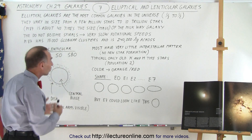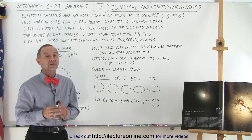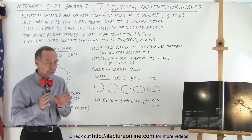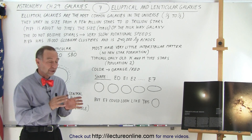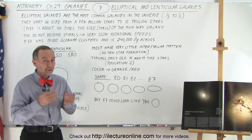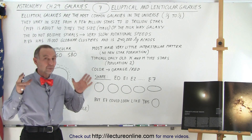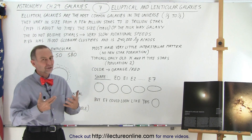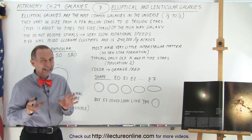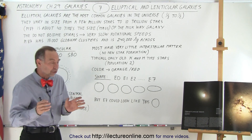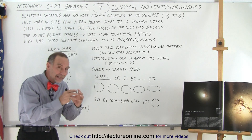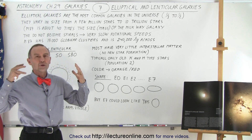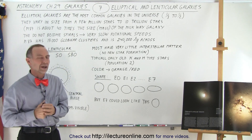Elliptical galaxies are definitely the most common galaxy in our universe. Now remember that in the previous video we stated that 72% of all galaxies observed are spiral galaxies, but spiral galaxies generally are very large. Elliptical galaxies can run the gamut from very tiny to extremely enormous in size.